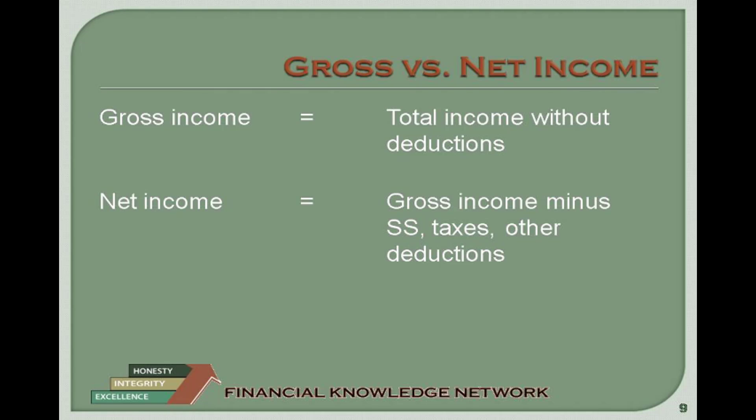Any refund you receive as a result of taking the EITC will not be used to determine your eligibility for the following programs or how much you can receive from them: Temporary Assistance for Needy Families (TANF), Medicaid, food stamps, and housing assistance. Child Tax Credit. The Child Tax Credit can lower the amount of income tax you owe and increase any refund you might receive. The benefit can be as high as $1,000 per child. Information is available in IRS Publication 972.